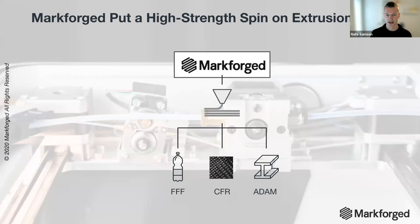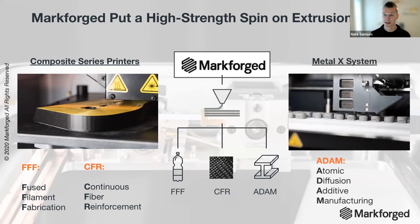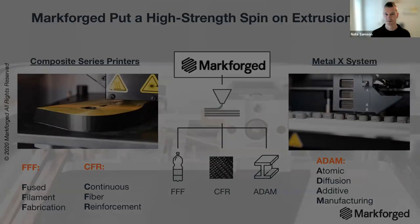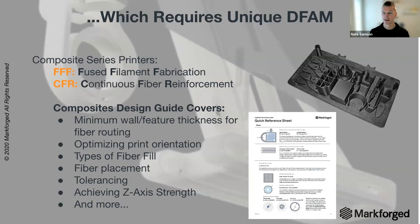The Markforged technology starts with our composite series. We've taken the traditional FFF (fused filament fabrication) process and paired it with CFR — continuous fiber reinforcement — which allows us to produce components with the strength of aluminum. On the metal side, we developed ADAM, the atomic diffusion additive manufacturing process, bringing metals into what we know from the FFF process. Understanding these processes is critical to starting your design process, and these unique technologies do require some unique DFAM.